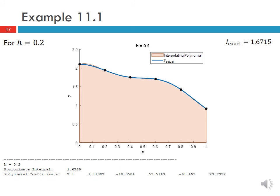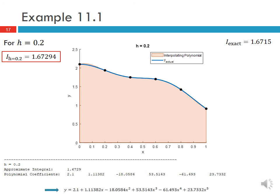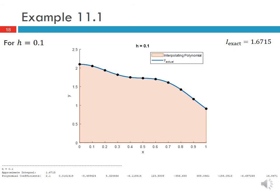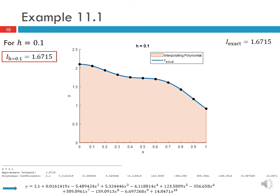Decreasing the step size to h = 0.2 gives an approximation of 1.67294, a fifth-order polynomial in this case, which is quite close to the actual integral. For h = 0.1, the approximation matches our exact integral up to four decimal places, with a higher-order interpolating polynomial fitting the data points closely.